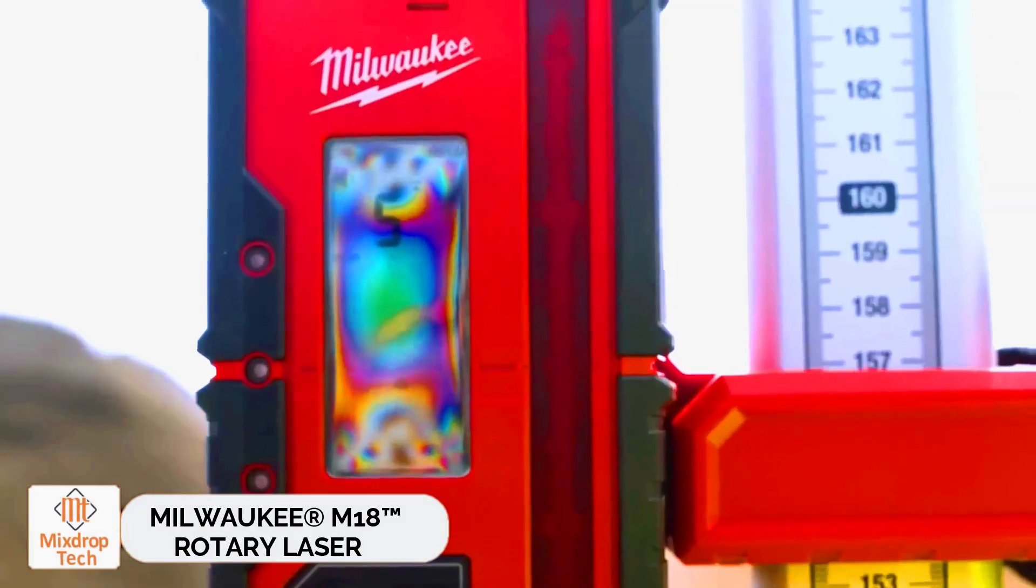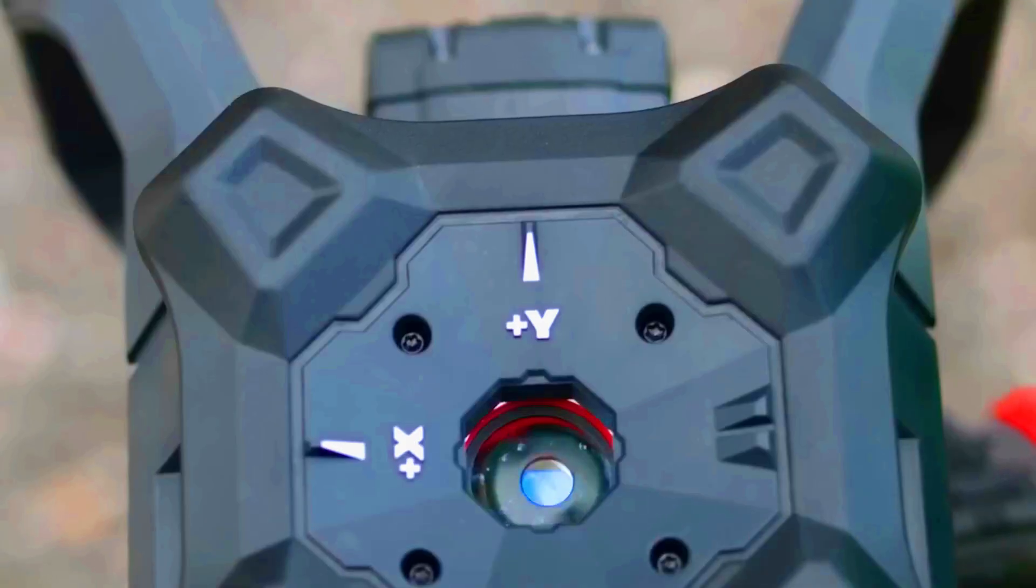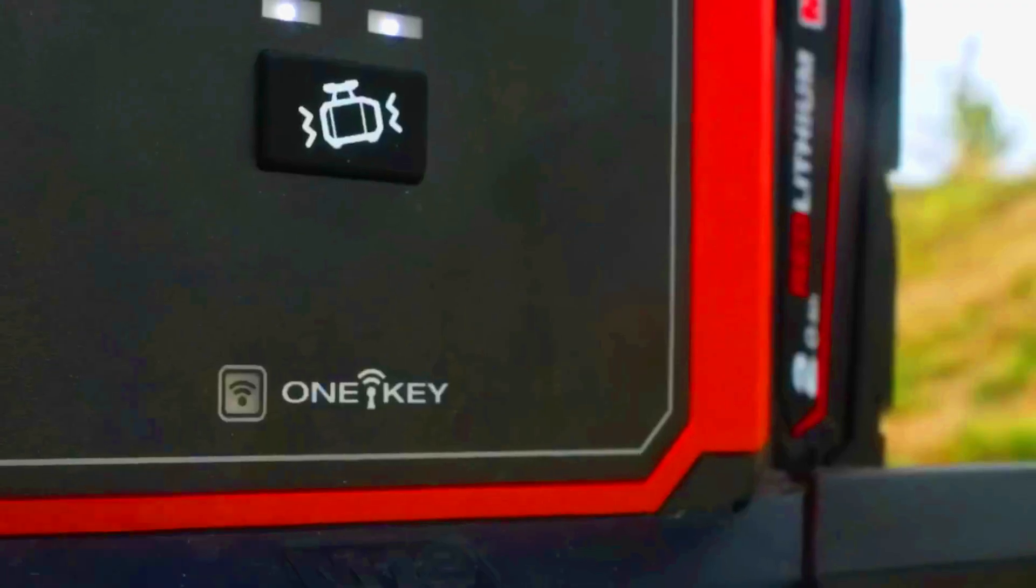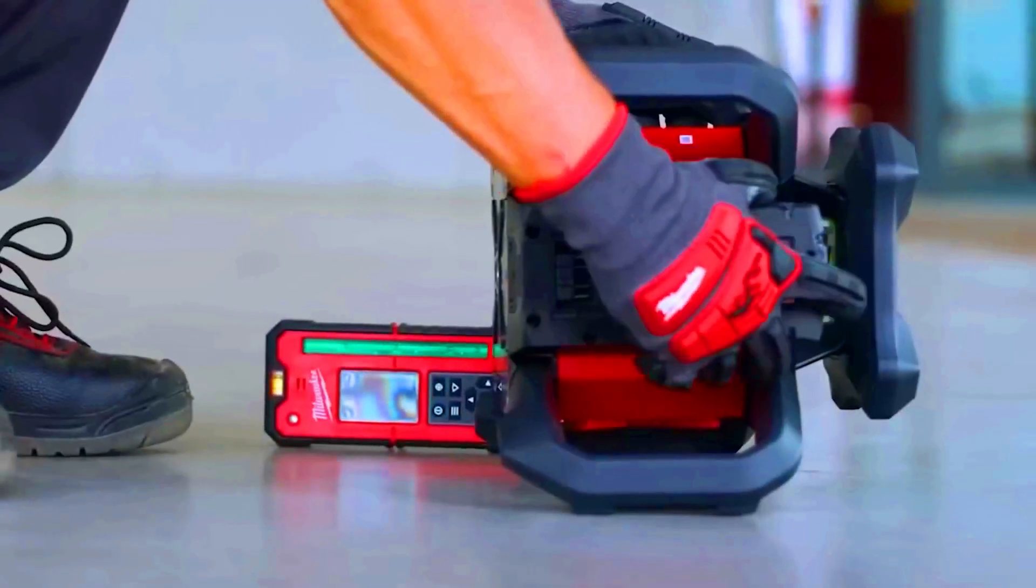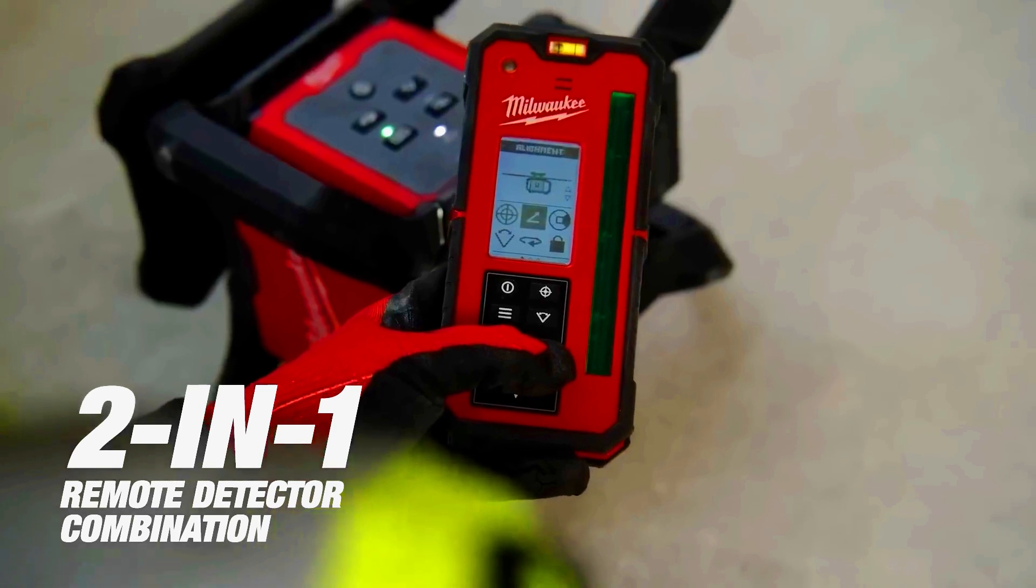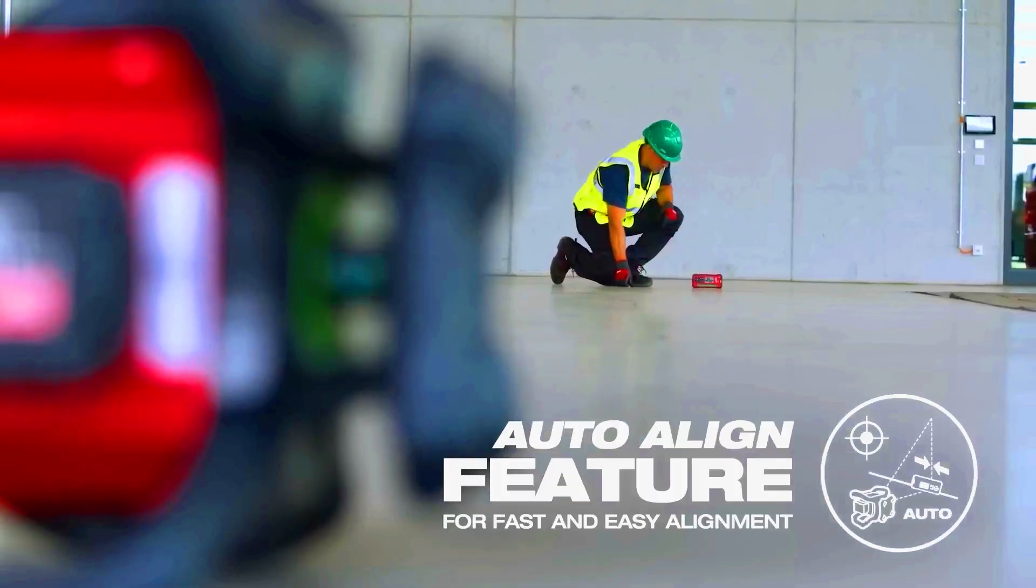Milwaukee M18 Rotary Laser. Milwaukee has introduced a range of rotary lasers that are compatible with the M18 battery family and support remote control. Even the entry-level model, the 300M, offers over 32 hours of operation on a single charge. Its range of 300 meters is enough for many commercial users.